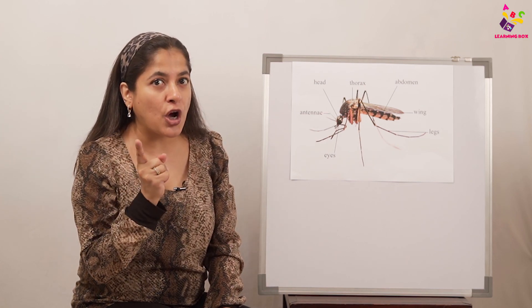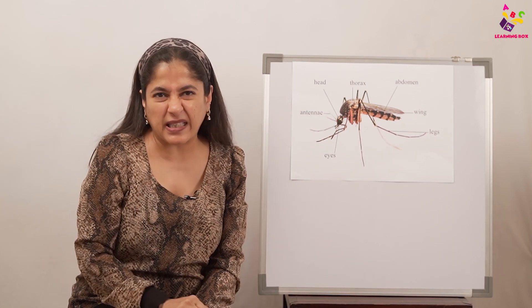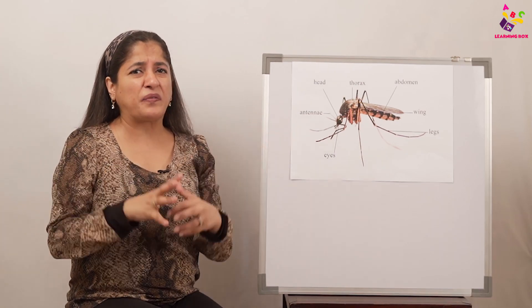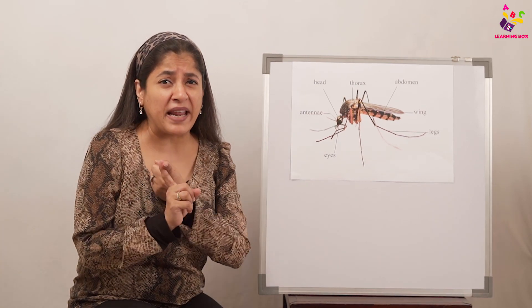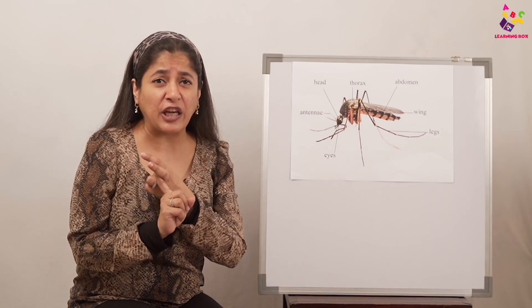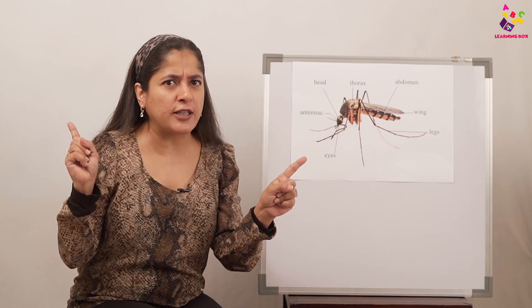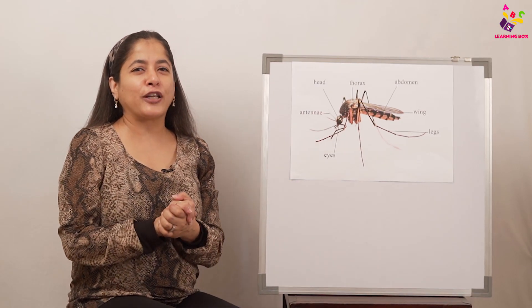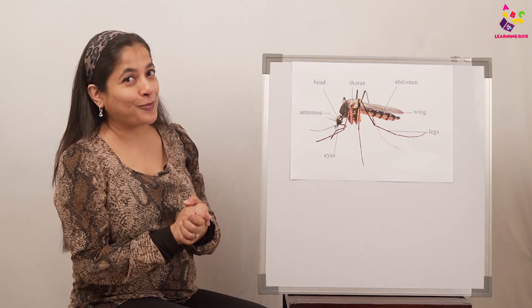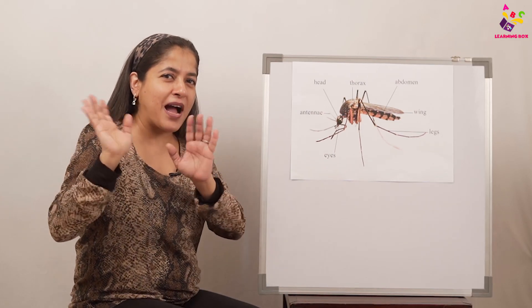One very important thing: make sure that you keep mosquitoes away from your house, because mosquitoes spread a lot of diseases. Because they live in dirty water, they give us malaria and dengue. So make sure there are no mosquitoes in your house. I'm sure you all enjoyed this session, so you must like, share, and subscribe. See you soon, bye!